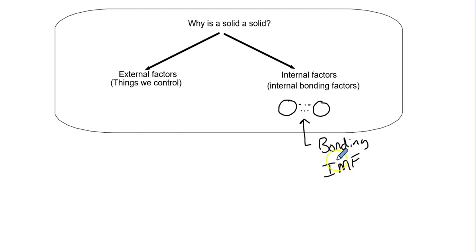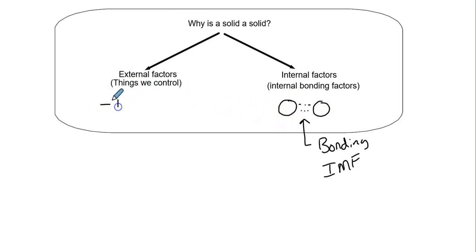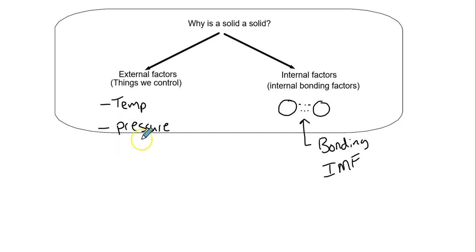This is in a chapter on states of matter and we've already covered a lot of material, but we'll be reviewing that again here shortly. External factors are going to be temperature and pressure. Volume might be something we can control, but for solids, volume is not a huge determining factor — when you get to gases it is.